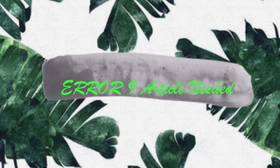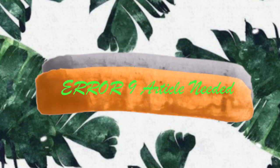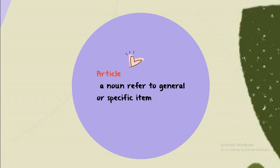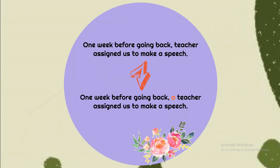Error 9: Article. Articles are used to indicate whether a noun refers to a specific or general item. Let's see a common mistake: 'One week before going back, teacher assigned us to make a speech.' The correct version is: 'One week before going back, the teacher assigned us to make a speech.' Now you know the importance of articles in a sentence.